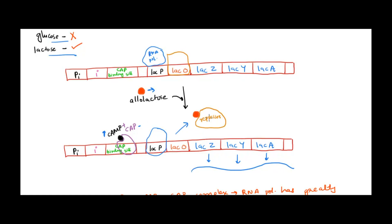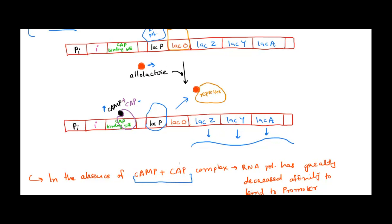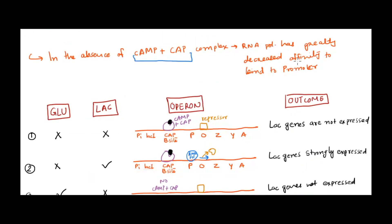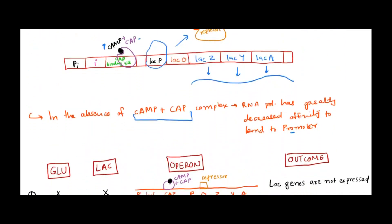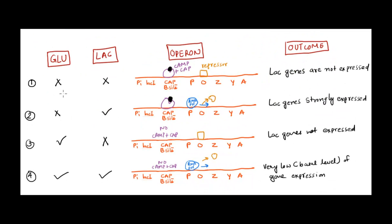The cyclic AMP and CAP complex is very important to increase the affinity of RNA polymerase to the promoter and increase transcription. Without cyclic AMP and CAP, the affinity of RNA polymerase decreases and transcription is very low. Now let's look at different scenarios. First: no glucose and no lactose. If there is no glucose, adenylyl cyclase produces cyclic AMP, so cyclic AMP is high, it binds CAP, and the complex binds at the CAP binding site.